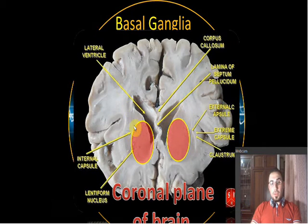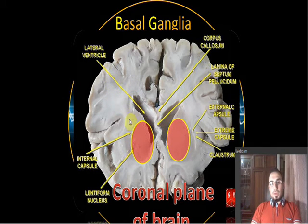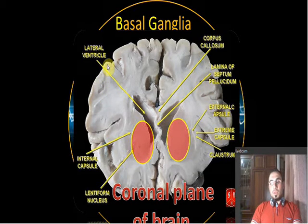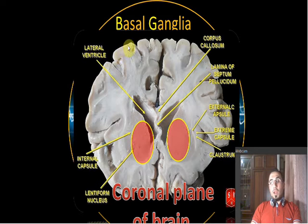Here is where the basal ganglia are located — you can see the lateral ventricle and the thalamus nearby. In this cross-section of the brain, the cortex appears gray because neuron cell bodies are located there. The axons form the white matter. The internal capsule is where fibers travel through — it's like a road through which axons come and go.